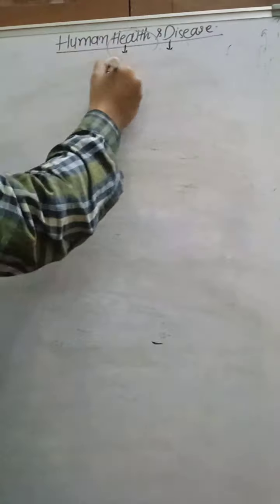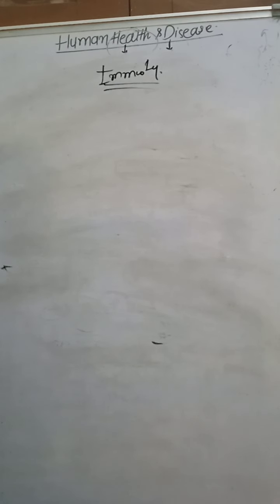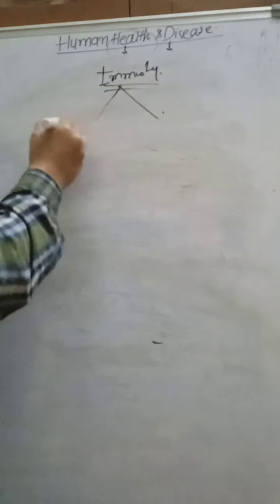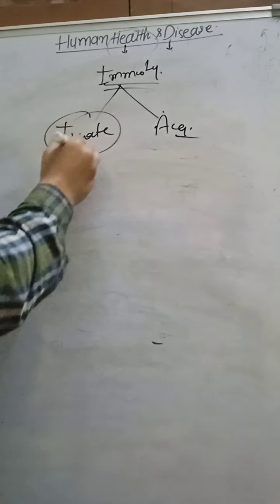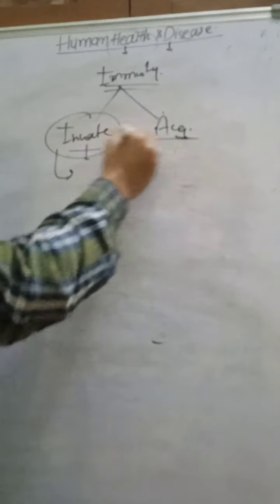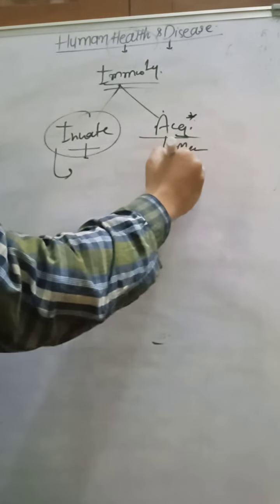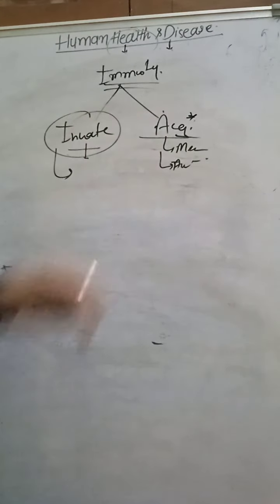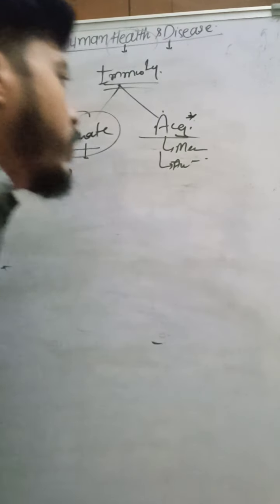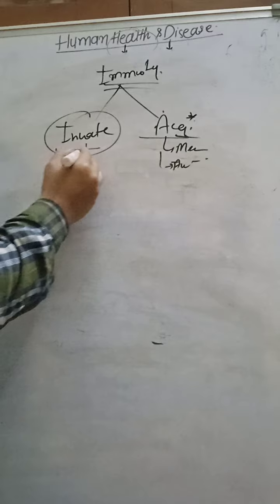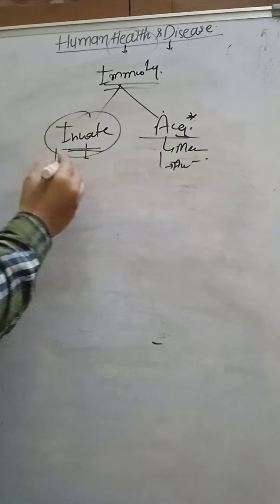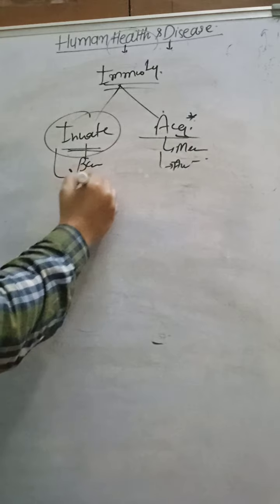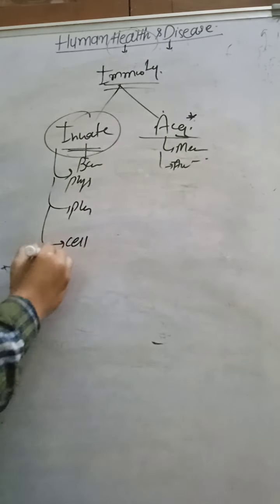Next is immunity - a very important topic. Immunity provides protection against disease and protects against antigens by resisting infection. There are two types: innate and acquired immunity. Innate immunity is present from birth and does not have memory cells and is not antigen-specific. Acquired immunity, gained after birth, has memory cells and is antigen-specific. It recognizes previously encountered antigens. Innate immunity has four barriers: physiological, physical, cellular, and cytokine.